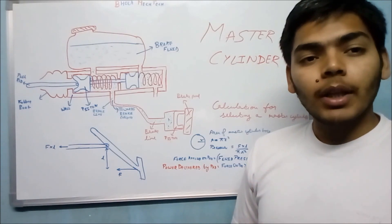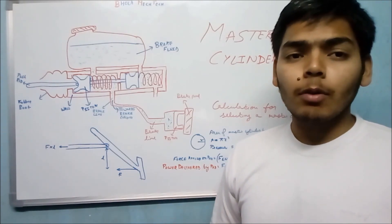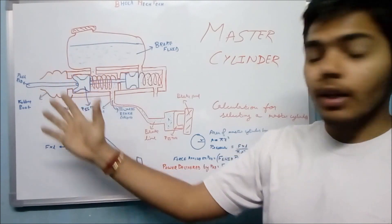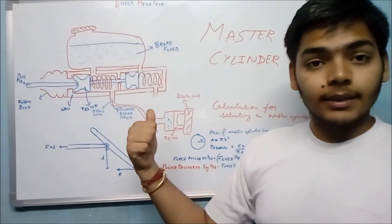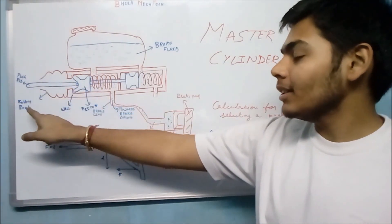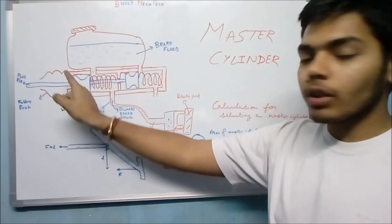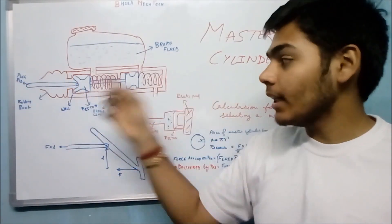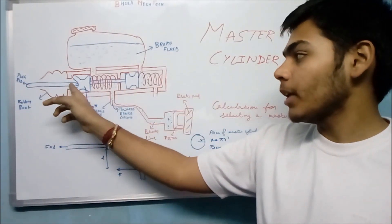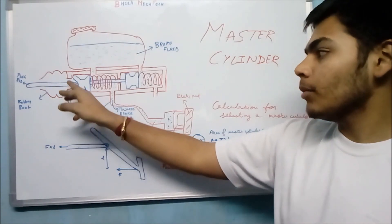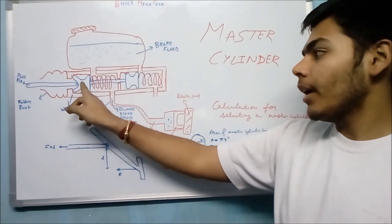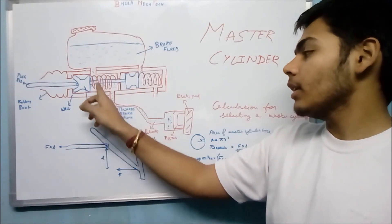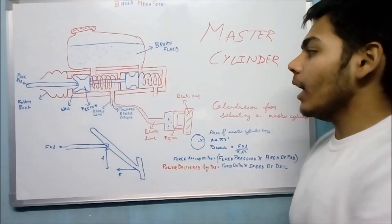Let's start with the components. First of all, this is a push rod. This is a rubber boot for the prevention of dust particles that may go inside from that push rod. Inside there is an oil seal, and then the piston, and then this is the spring.